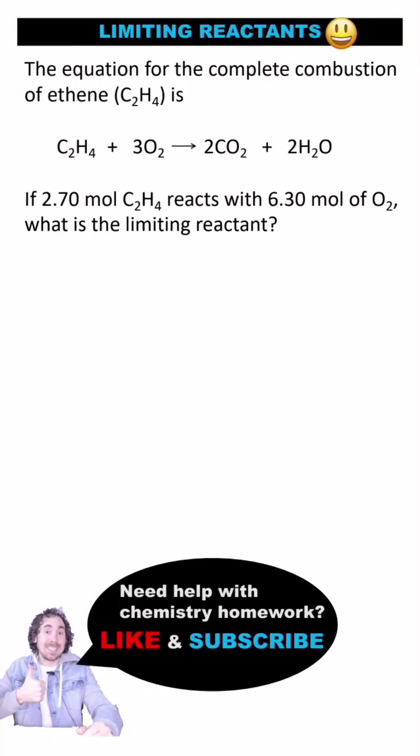In a chemical reaction, the reactants are consumed in specific ratios based on the stoichiometry of the balanced chemical equation. In this equation, for every 1 mole of ethene, 3 moles of oxygen gas react. We could say that the reactants react in a 1 to 3 ratio.